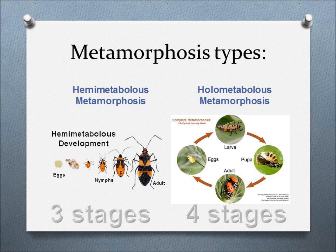To simplify: hemimetabolous insects have three stages — egg, nymph, and imago. Holometabolous insects have four stages — egg, larva, pupa, and imago.